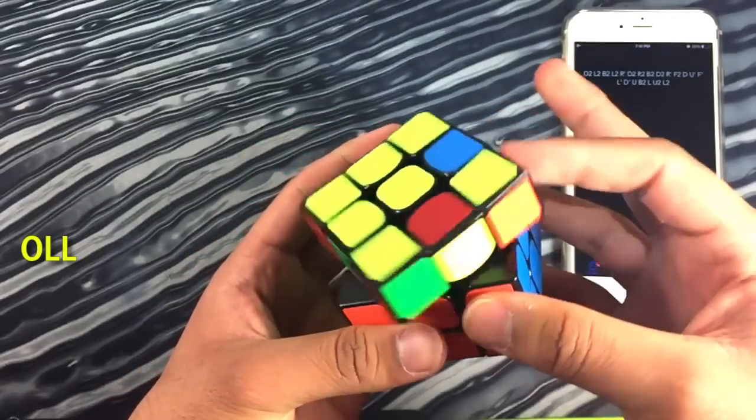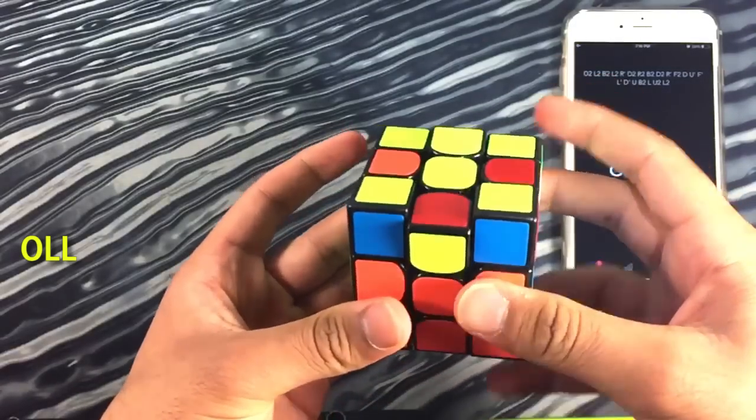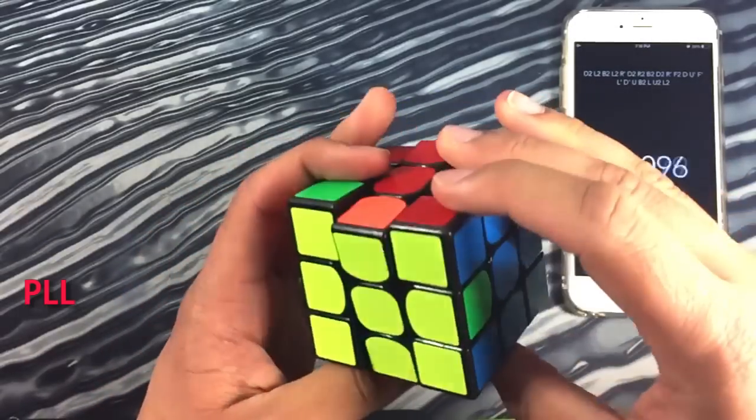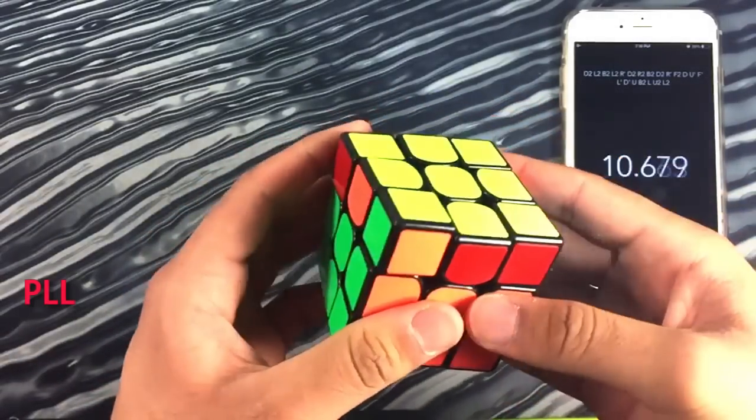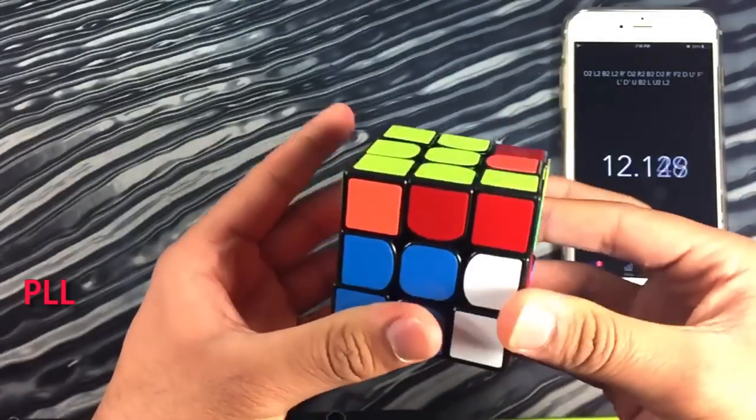From there I got a pretty easy OLL. I actually really like this OLL. It's just a nice fun one to solve. And after that there was a G perm which wasn't so good but I was still able to pull off a sub 14 solve there which I was pretty happy with.